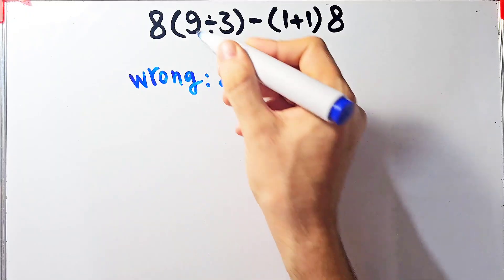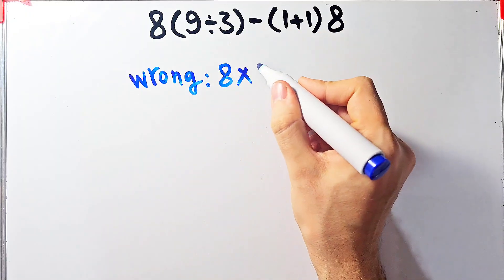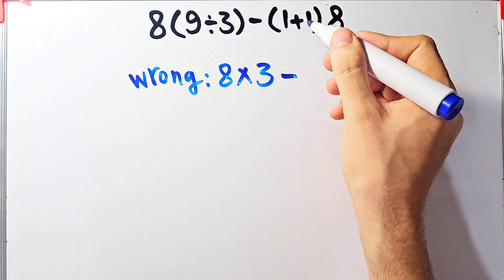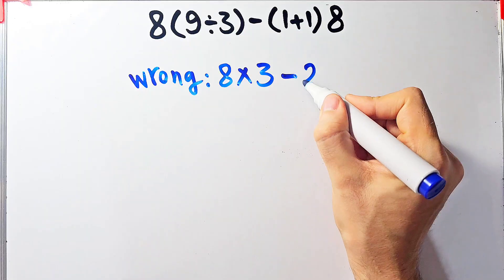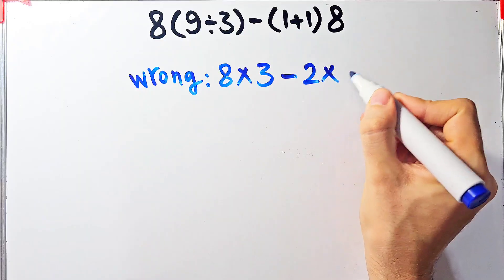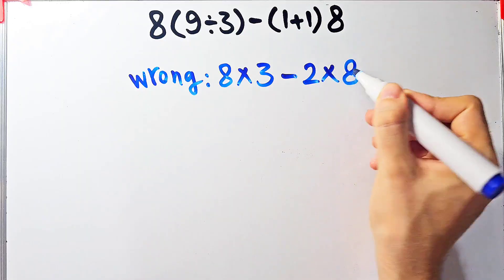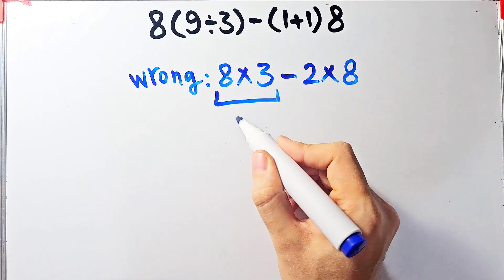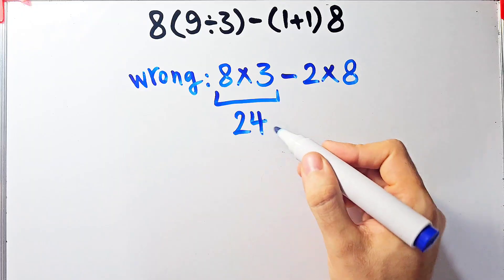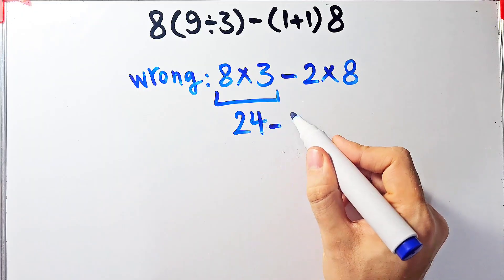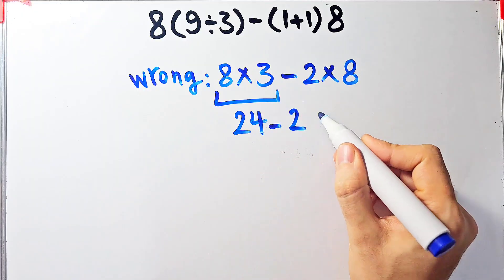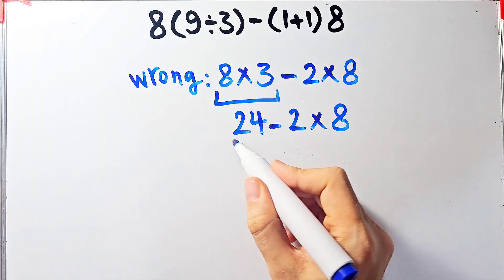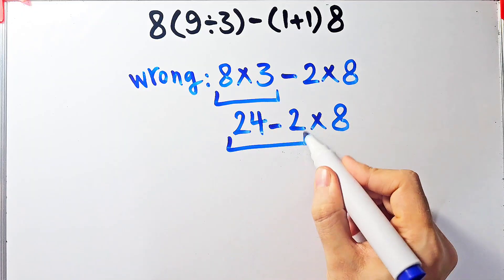For example, some people solve this question like this: 8 times 9 divided by 3, which equals 3, then minus 1 plus 1, which equals 2 times 8. Then 8 times 3 equals 24, and 24 minus 2 times 8, giving 24 minus 2 equals 22.